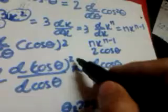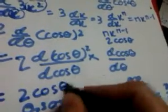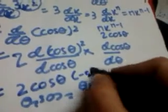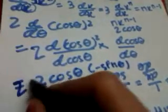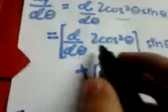Applying the power rule: n is 2, x is cos theta. Using the rule that the derivative of x to the n is n times x to the n minus 1, replacing x with cos theta and n with 2, we get 2 cos theta. The derivative of cos theta is minus sin theta.